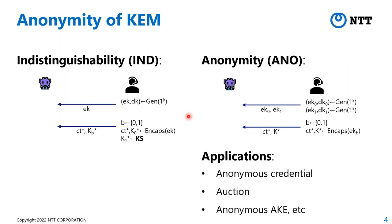Unfortunately, IND security does not imply recipient privacy. For example, consider a KEM scheme whose ciphertext contains a public key — such a scheme can achieve IND security, but the ciphertext apparently reveals the recipient. Therefore, we consider anonymity, specifically ANON-CCA security, which captures recipient privacy: if the adversary sees two encryption keys EK_0 and EK_1, it cannot distinguish which key was used to generate a ciphertext. This notion has many applications — anonymous credentials, auctions, anonymous authenticated encryption, and privacy-enhancing technologies.